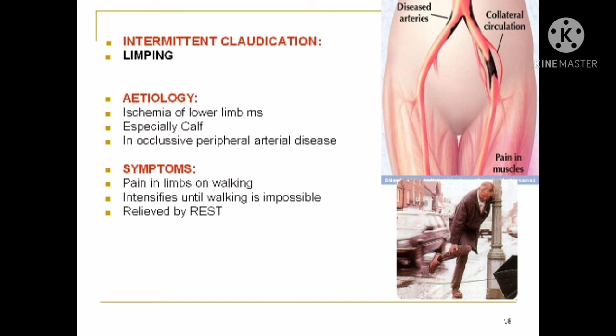Intermittent claudication or limping — the etiology is ischemia of the lower limb muscles, especially the calf muscles. It occurs in occlusive peripheral arterial disease. The symptoms are pain in the limbs on walking, which intensifies until walking becomes impossible, and is relieved by taking rest.